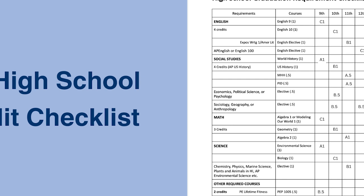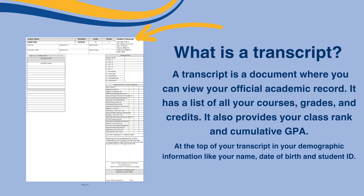Today we're going to talk about your credit checklist, but first let's talk about your transcript. What is that thing? A transcript is a document where you can view your official academic record. It has a list of all your courses, grades, and credits.